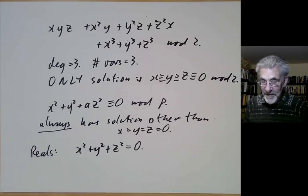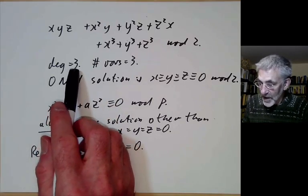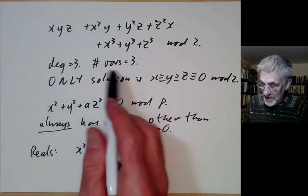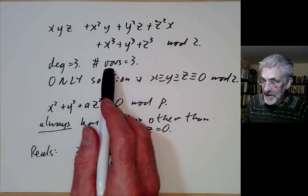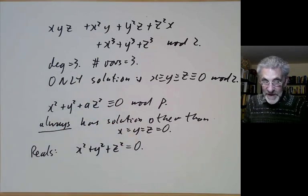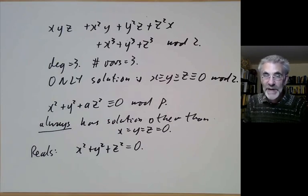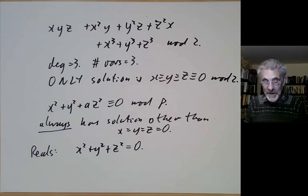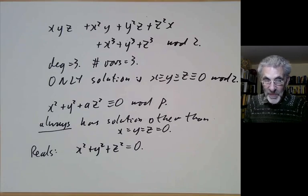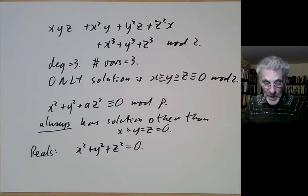The Chevalier-Warning theorem, the conclusion that says that homogeneous polynomials in sufficiently many variables compared to their degree always have roots, that property is something called being quasi-algebraically closed. So the Chevalier-Warning theorem implies that the integers mod p has this property of being quasi-algebraically closed.